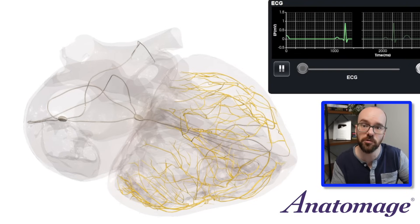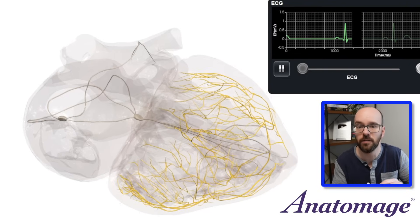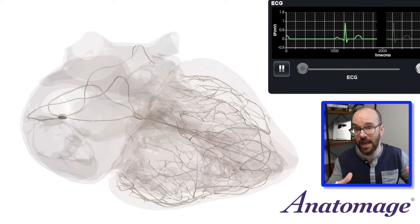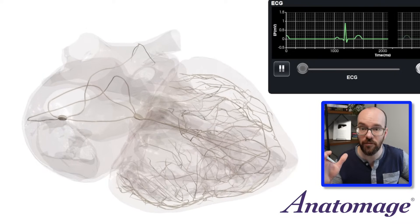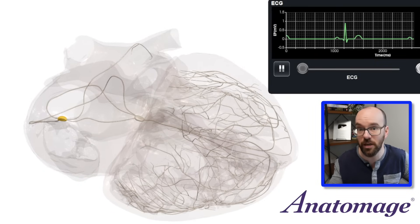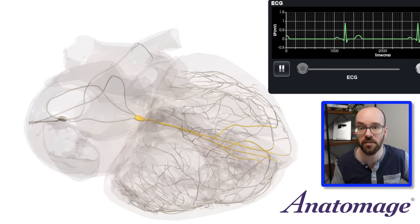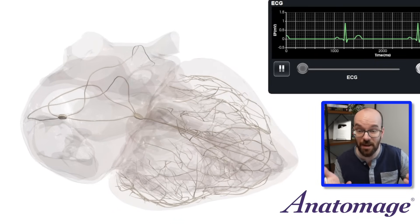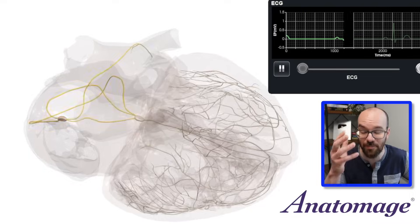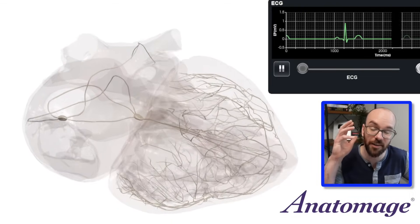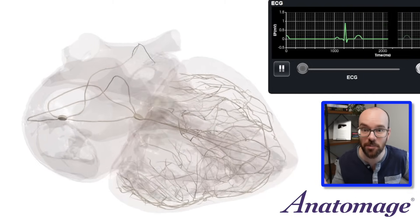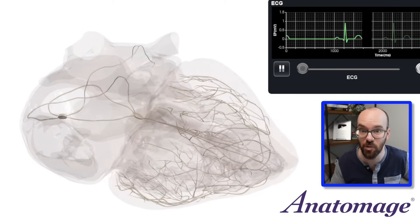The ventricles contract during the ST interval, then relax until another signal from the SA node triggers a new P wave and the whole process starts again. Watch it happen in real time — this entire sequence occurs in your heart every single beat, multiple times per second. It's remarkable.